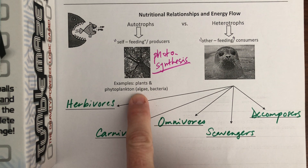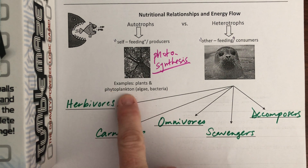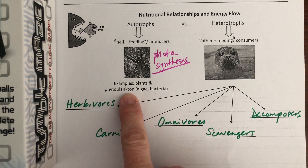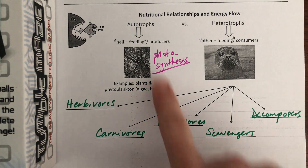But we don't really see these guys. Sometimes you run into some algae, but in the ocean is where you get the maximum amount of photosynthesis. We're just used to the plants, so keep that in mind.